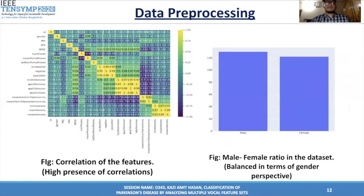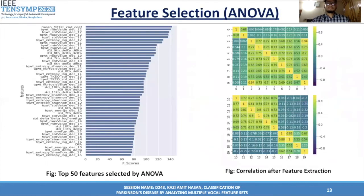The right figure shows that the dataset is balanced in terms of gender, with 130 males and 122 females. The left side image shows that there is high correlation among the data, and we eliminated some unnecessary columns. For feature selection, we implemented Analysis of Variance — ANOVA — to select the topmost features. The top features according to their F-score are shown in the left-sided figure. We can see that MFCC, TQWT, vocal fold, and some baseline features are the most significant. The right-sided correlation heatmap was generated after applying ANOVA, which also resolves the correlation problem.